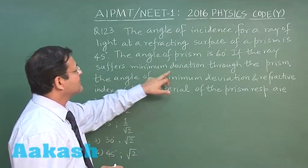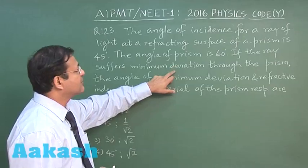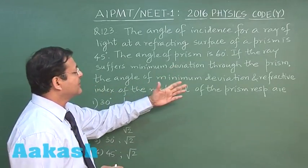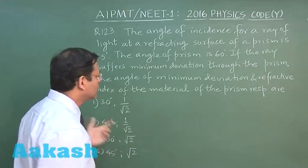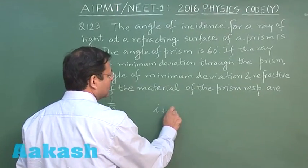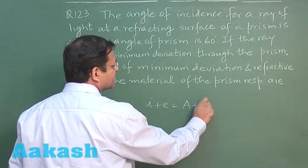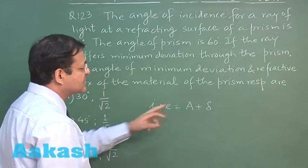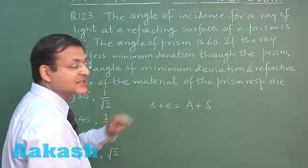If the ray suffers minimum deviation - you see this is a very important thing - through the prism, then the angle of minimum deviation and refractive index: use the formula i plus e is equal to A plus delta. You know that this is a general formula, and if the deviation is minimum then i and e they are same, you understand.